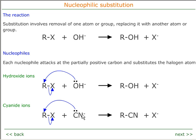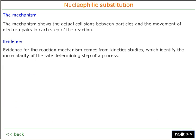When a cyanide ion attacks a haloalkane, we get a nitrile and a halide ion. The mechanism of the reaction shows the actual collisions that take place in each step of the reaction. These are usually shown by curly arrows indicating the movement of electron pairs, which are the only things that can really move in a reaction mechanism.